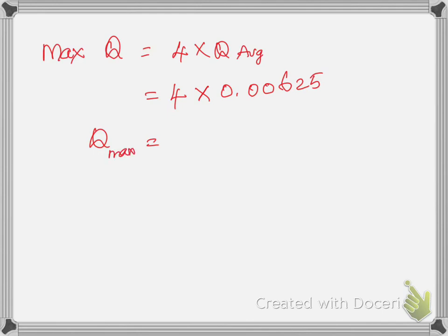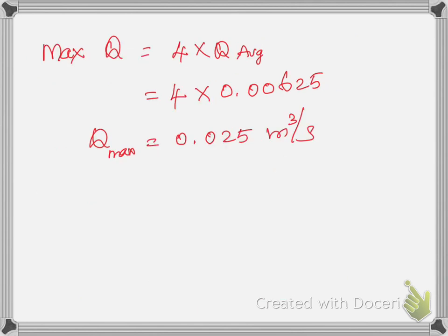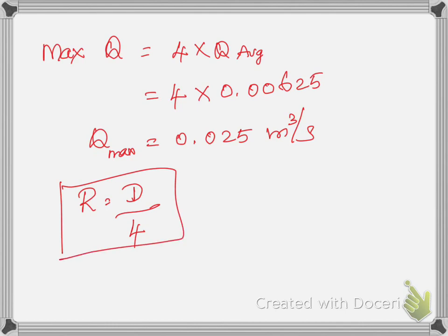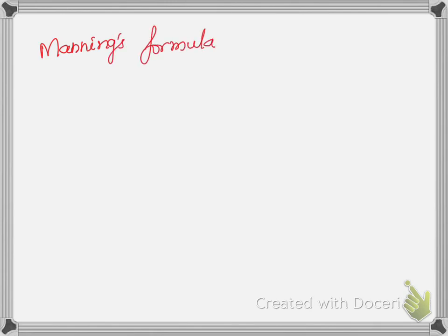For this maximum discharge, we need to find the pipe diameter. The sewer pipe is circular. To get the diameter, we use Manning's formula: v = (1/n) × r^(2/3) × s^(1/2), where v is velocity, n is the roughness coefficient (Manning's n = 0.013), r is the hydraulic radius, and s is the slope. The slope is not given, so we assume s = 1/300.